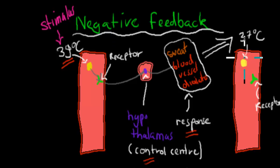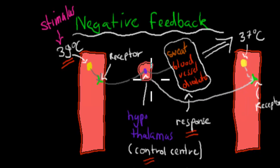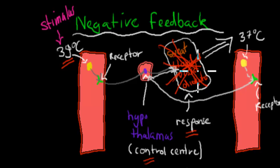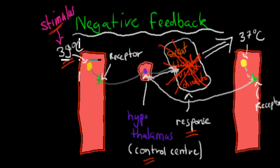Now everything is good. The receptor picks up that change — 37 degrees Celsius is detected — and sends a signal back to the hypothalamus. This new signal tells the hypothalamus that everything is okay and we don't need to produce sweat anymore, because if we sweat even more, our temperature will drop even further. So the hypothalamus decides to go back to those glands and shut off the response — the response stops to make sure temperature doesn't go too low. That was negative feedback. Negative feedback is the idea that if you have a stimulus — in this case, body temperature too high — it is controlled by bringing it back down, not making it even higher. That would be positive feedback. So body temperature control is definitely an example of negative feedback.